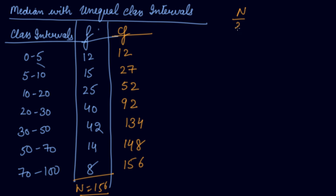Now n divided by 2 item we have to find out which is 156 divided by 2 which equals 78. So 78th item. Now find out the median class. 78th item does not come in 52, it comes in 92 class. So this is your median class.